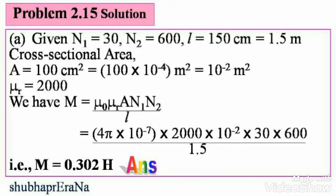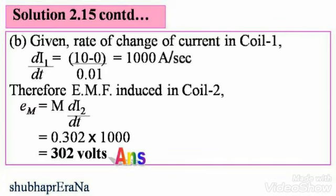Rate of change of current in coil 1, dI₁/dt = (10 − 0) / 0.01 = 1000 Amperes per second. Therefore EMF induced in coil 2, Eₘ = M × dI₁/dt = 0.302 × 1000 = 302 Volts. We will look at some more problems in the next session.